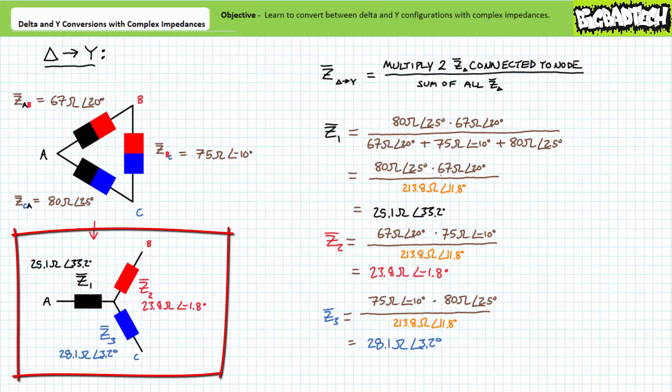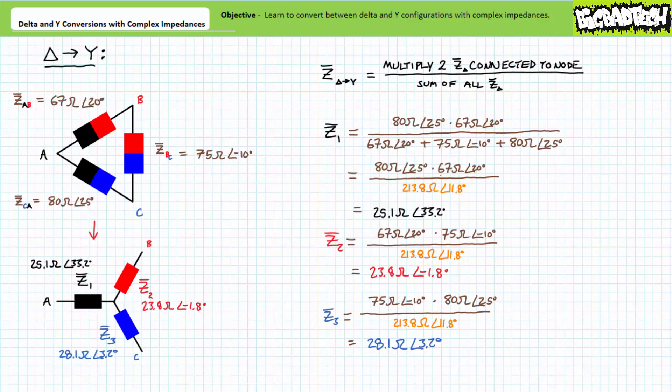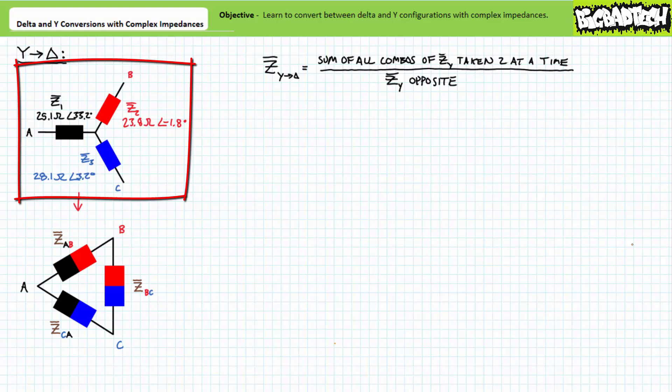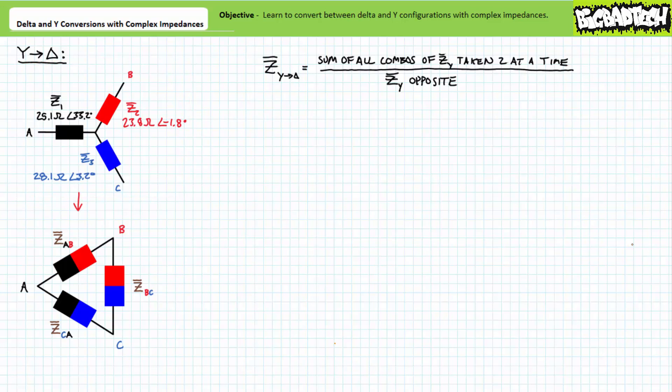Our equivalent Y configuration features Z1 at 25.1 ohms and 33.2 degrees attached to node A, Z2 at 23.8 ohms and negative 1.8 degrees attached to node B, and Z3 at 28.1 ohms and 3.2 degrees connected to node C. One should be able to exchange the previous delta configuration with this new Y configuration, and any circuit or sources attached to these three nodes will be none the wiser to the substitution. Let's try the reverse procedure and convert from a Y to a delta configuration.